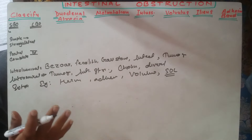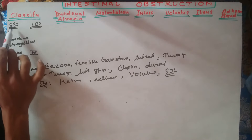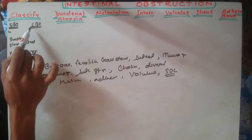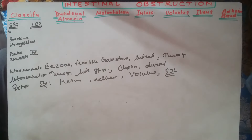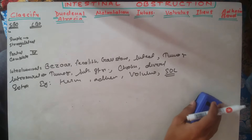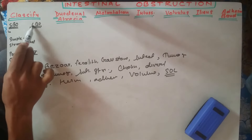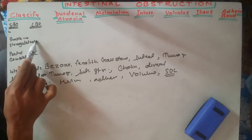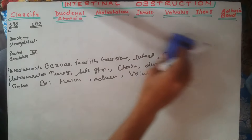Usually patients present with pain and vomiting in small bowel obstruction, and distension and rectal bleeding may be present during large bowel obstruction. To summarize, we classified intestinal obstruction as small vs large bowel, simple vs strangulated based on vascular compromise, complete vs partial, and by the wall layer involved.